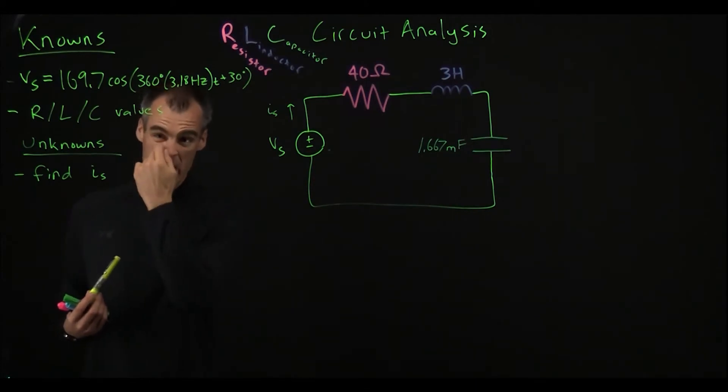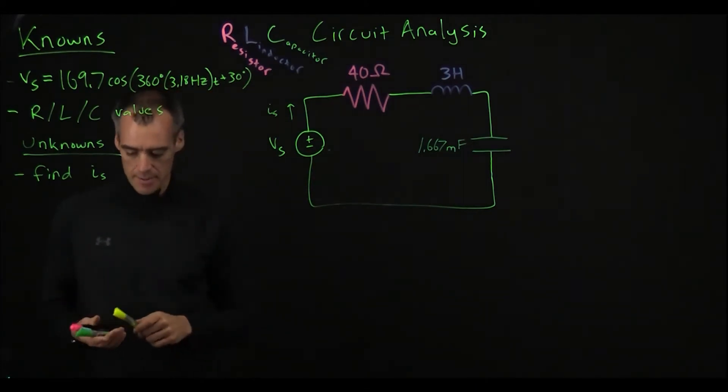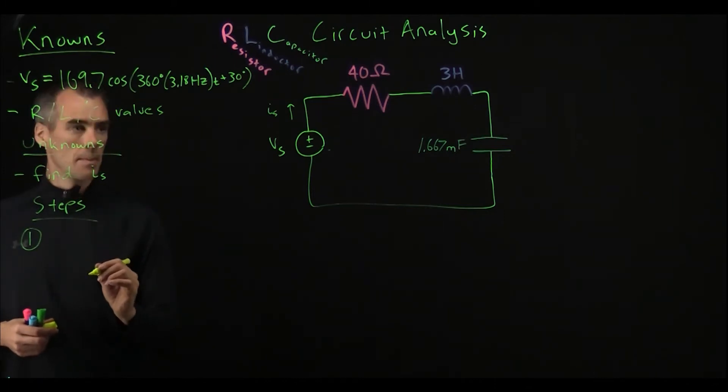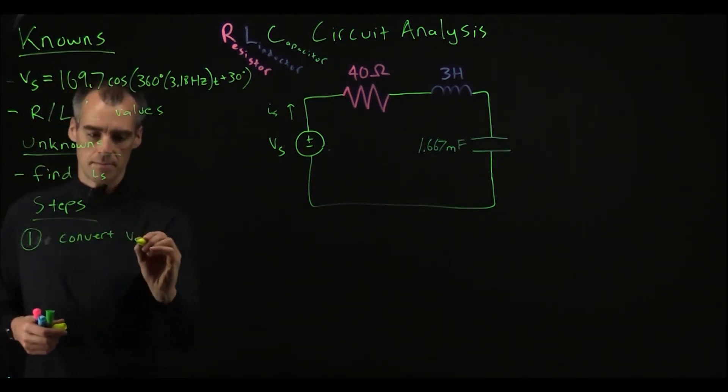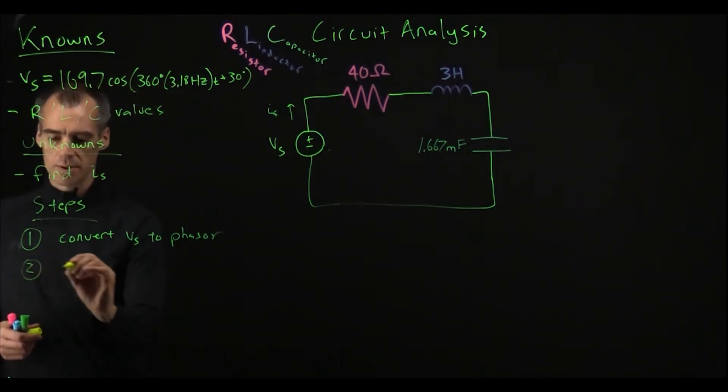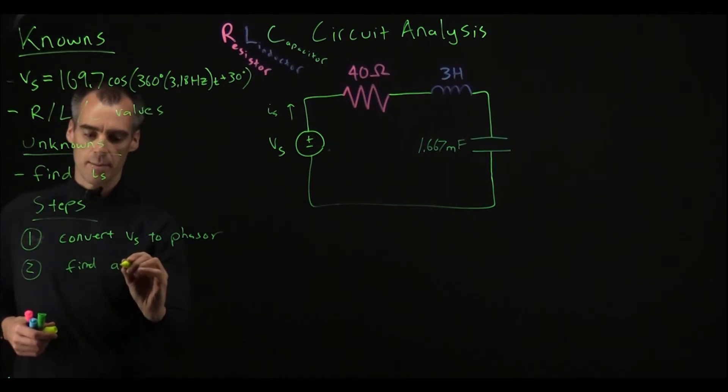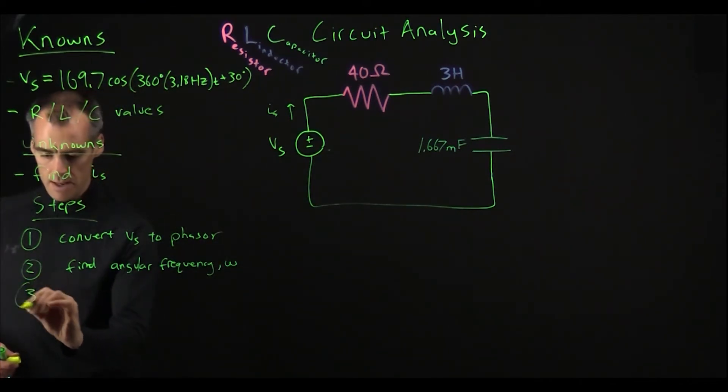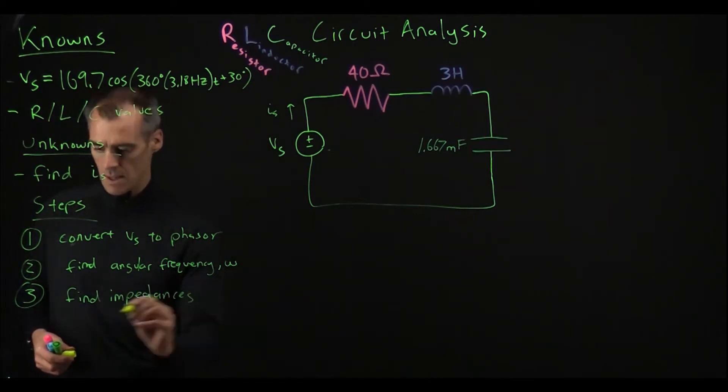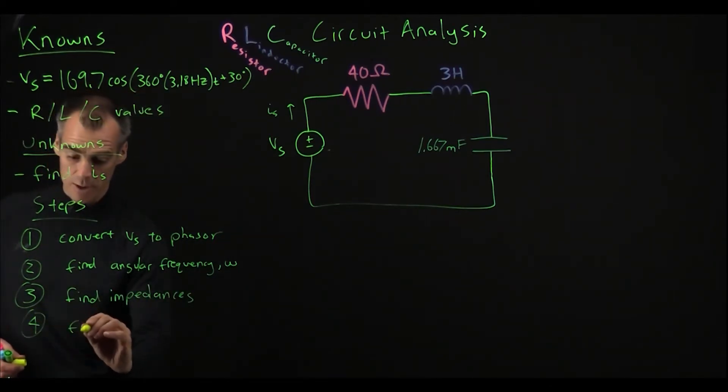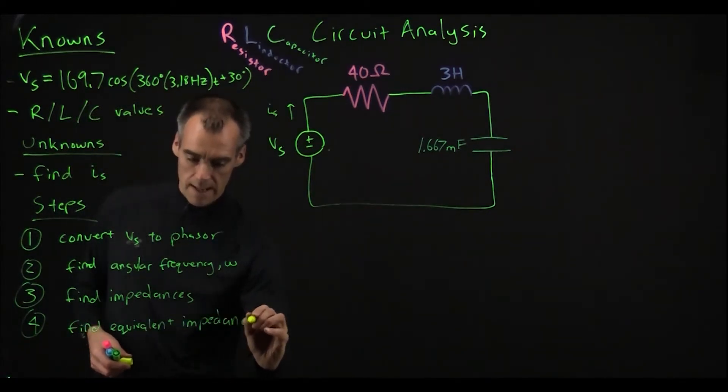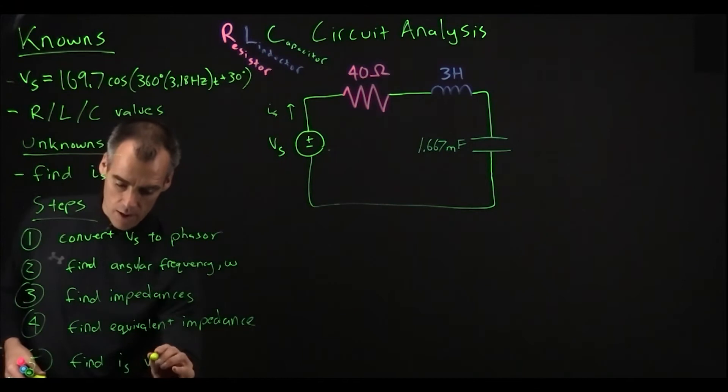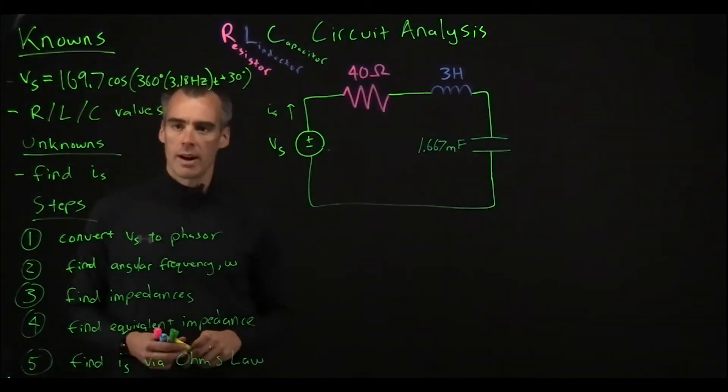Alright and in order to find this IS, we're going to go through five different steps here. Our first step is going to be converting our voltage source to a phasor. Step number two is going to be find angular frequency, omega. And step three is going to be find impedances. Step four is going to be find equivalent impedance. And finally step five, we're finally going to get to IS, and we're going to find it via Ohm's law. Alright so let's get started.